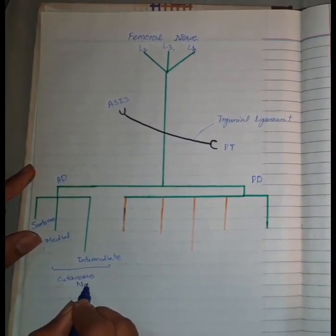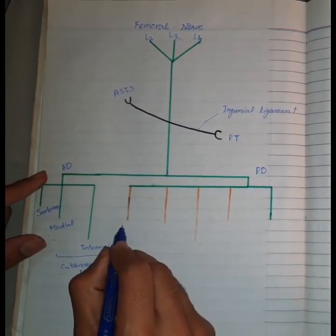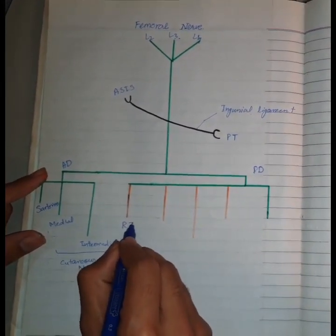The posterior division supplies rectus femoris, vastus lateralis, vastus medialis, and vastus intermedius.